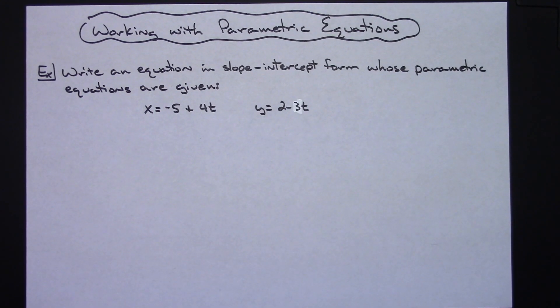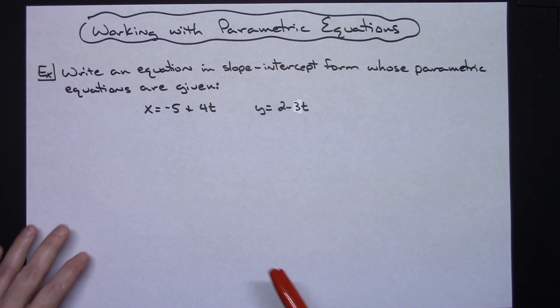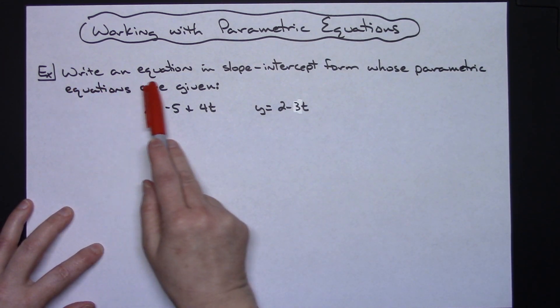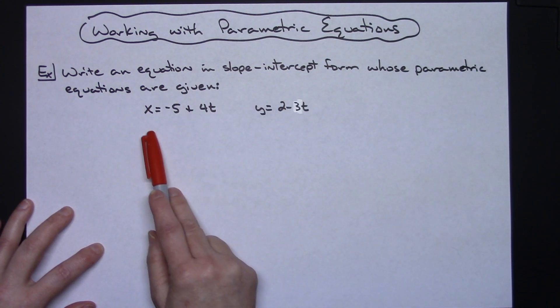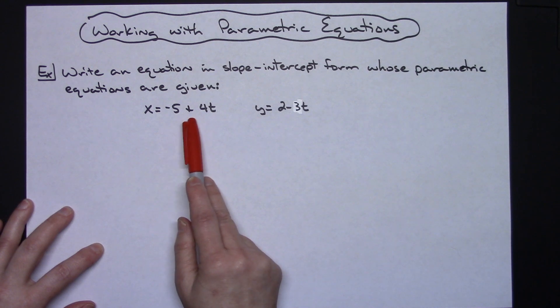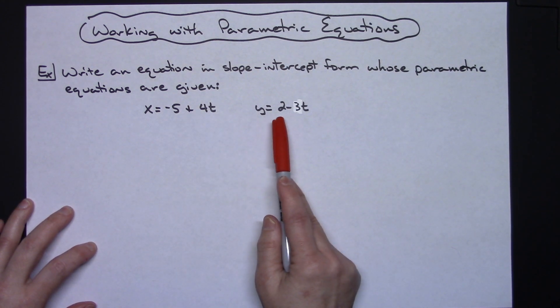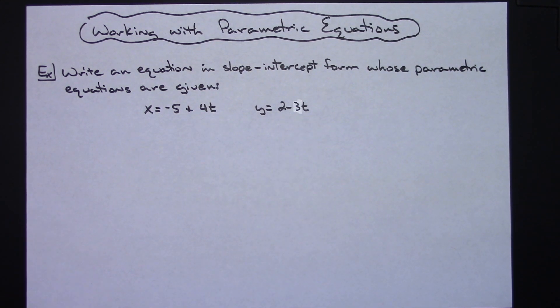In this video we're going to work out one example dealing with parametric equations. Our problem is to write an equation in slope-intercept form whose parametric equations are given by x = -5 + 4t and y = 2 - 3t.